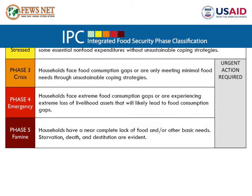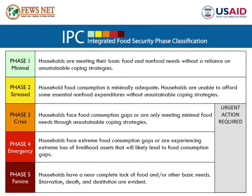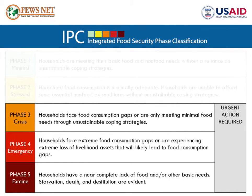This five-level scale is used by analysts and humanitarian assistance agencies around the world. Please note that when an area reaches Phase 3, 4, or 5 — crisis, emergency, or famine — urgent humanitarian assistance is required. FEWS NET uses an exclamation point on its maps to highlight areas where humanitarian assistance is helping to lower the phase classification.